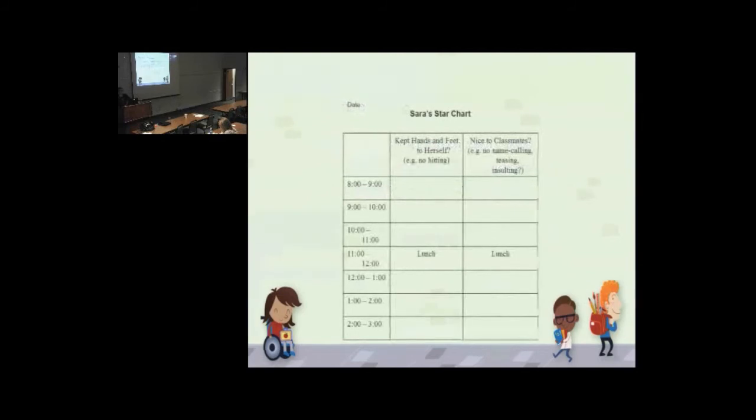This is an example of a really simple homeschool note, Sarah's star chart. The two goals, simply keeping her hands and feet to herself, being nice to classmates. So no name calling, no hitting. You want to specify what that behavior is going to look like so you know it when you see it, so that anybody who's filling out that homeschool note will fill it out essentially the same way.